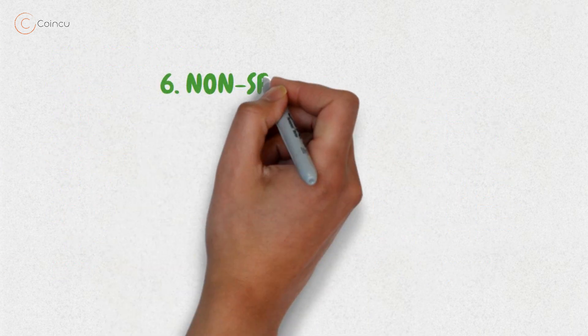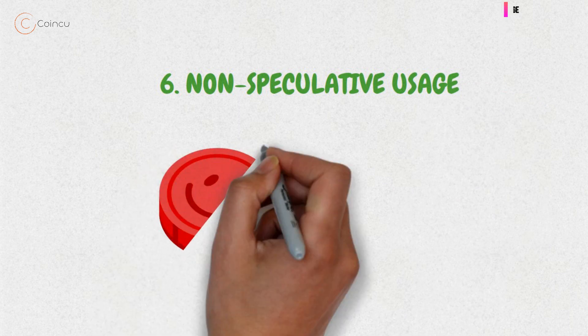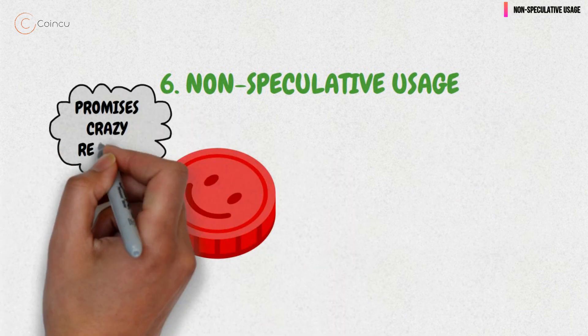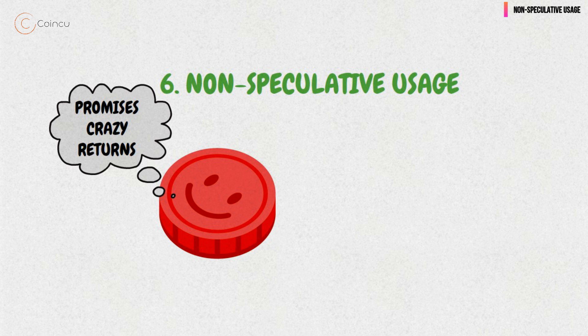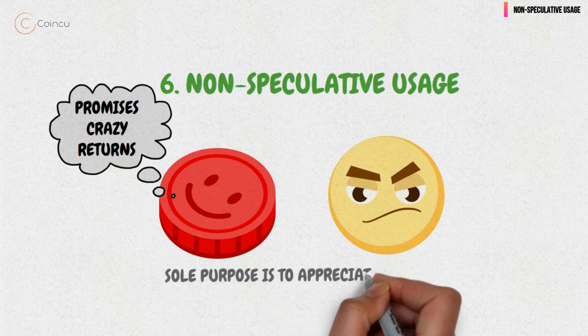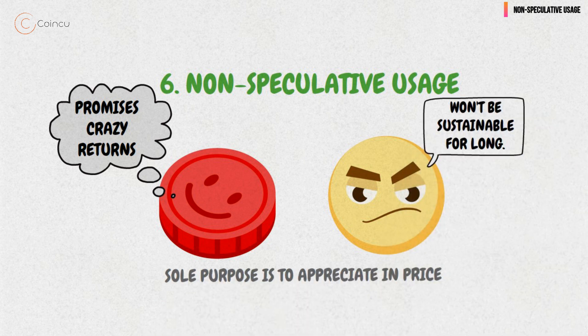6. Non-Speculative Usage. So you're eyeing up some emoji-based token that promises crazy returns, but does it actually do anything? It might get the Charles Ponzi seal of approval if its sole purpose is to appreciate in price, but it won't be sustainable for long.